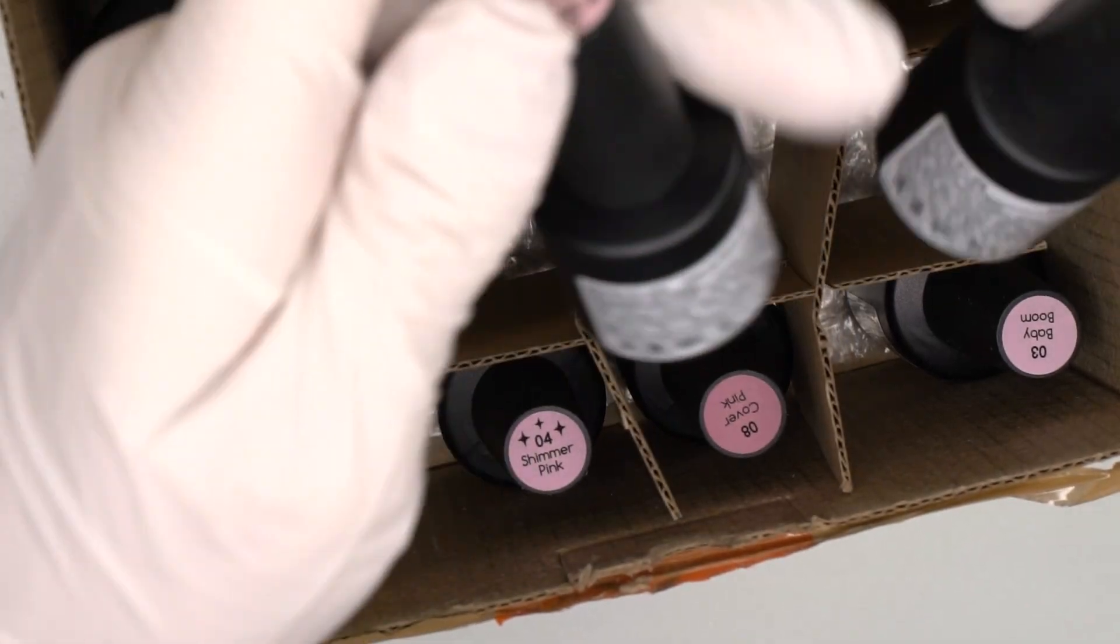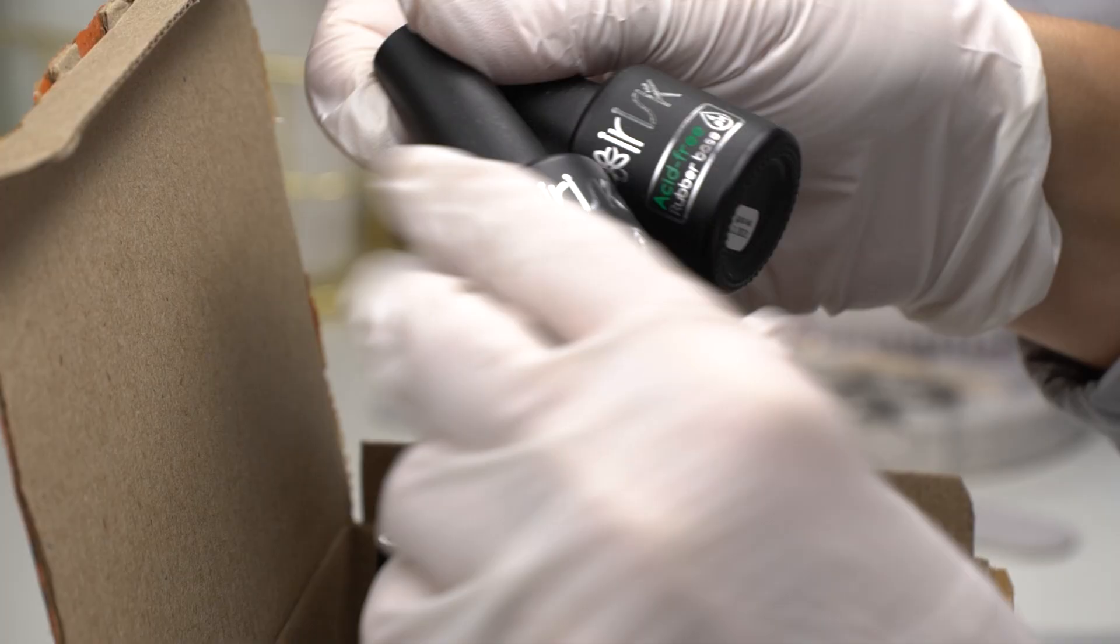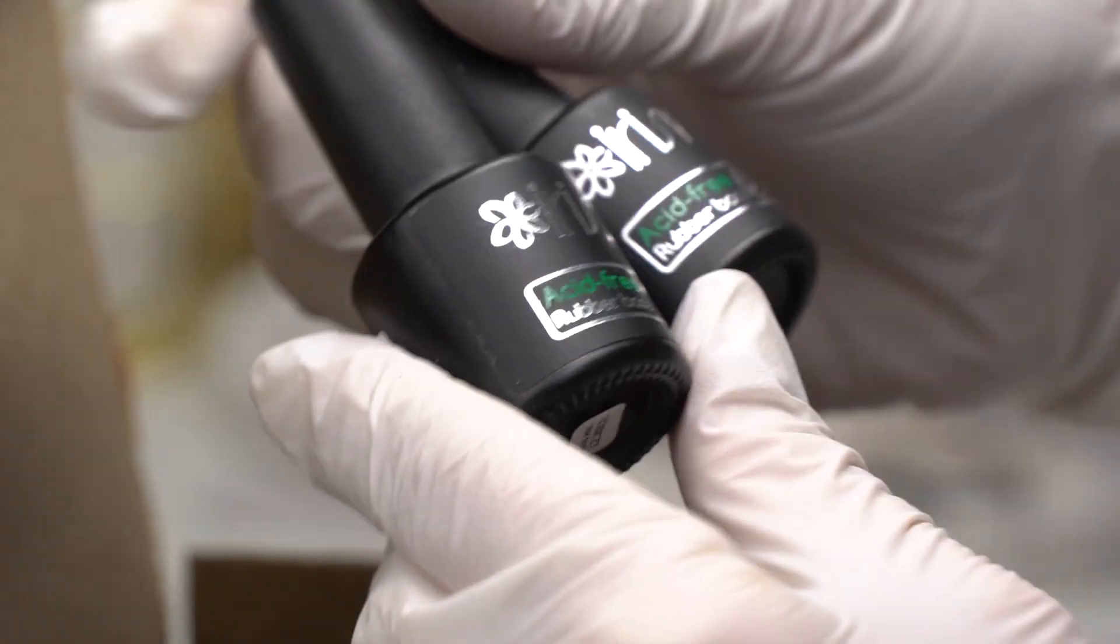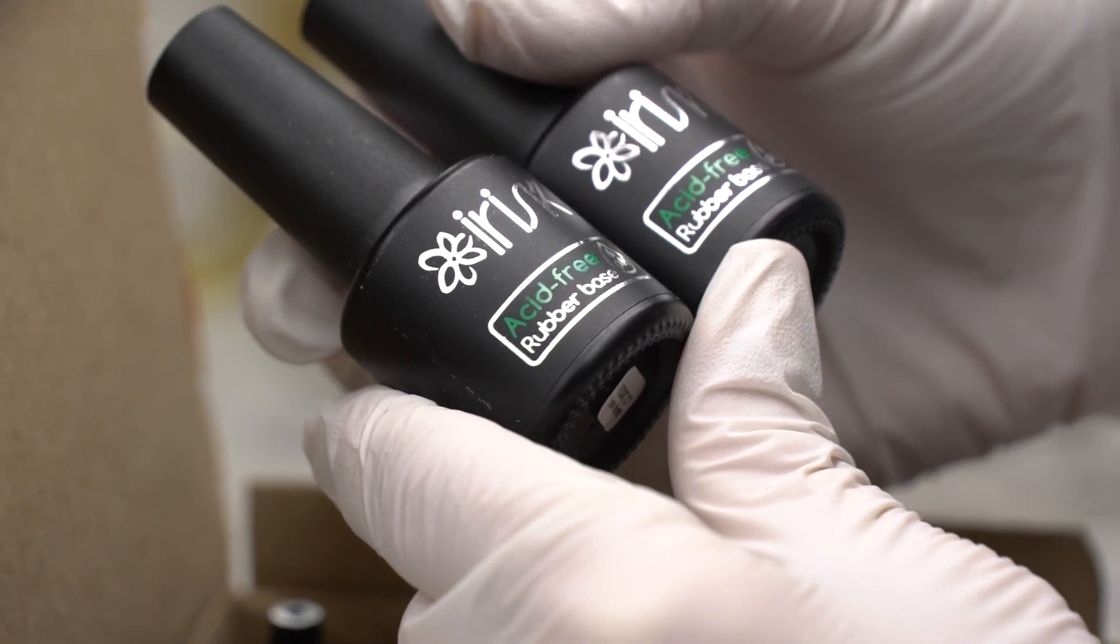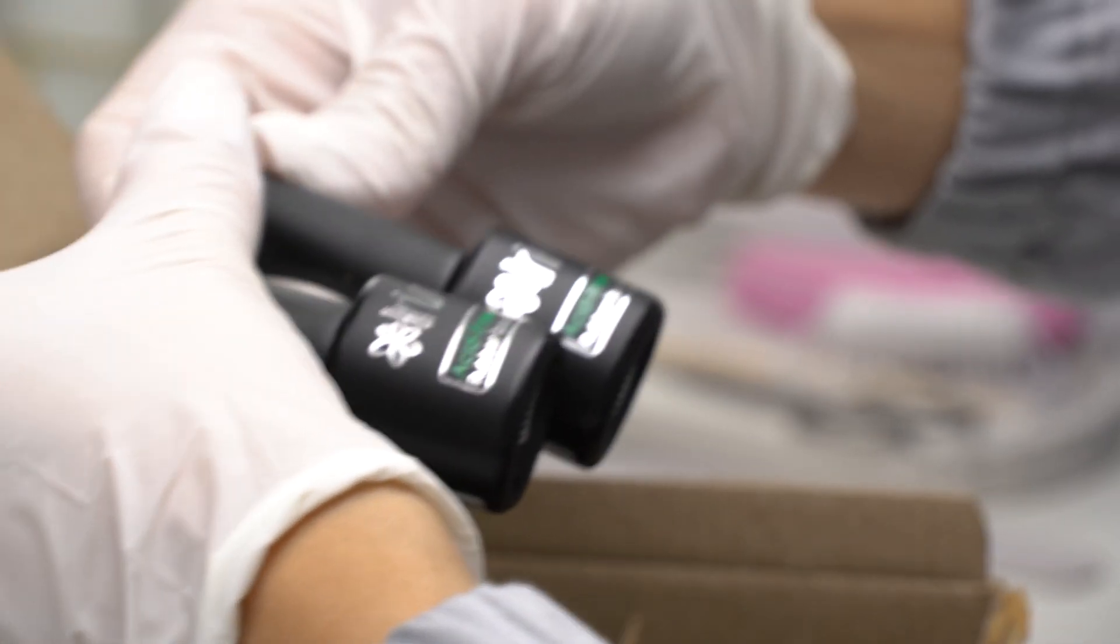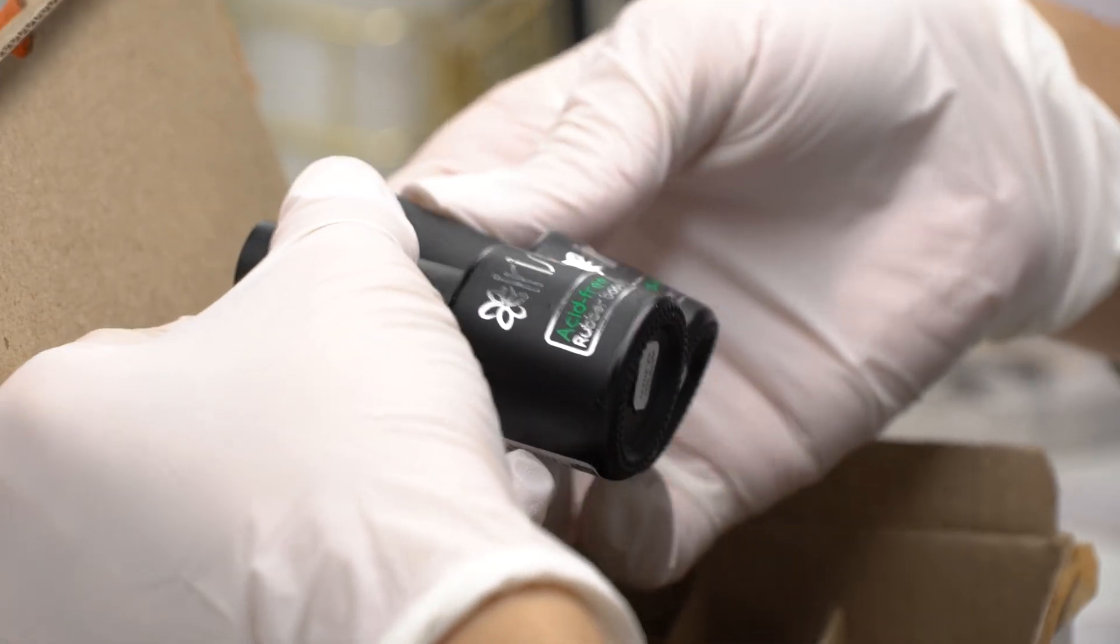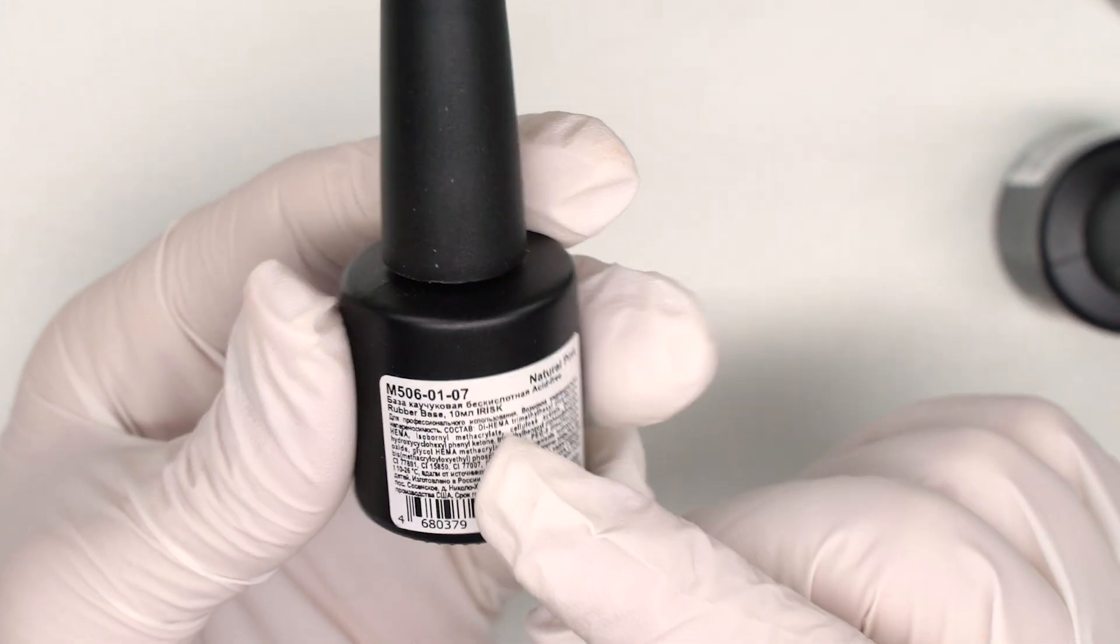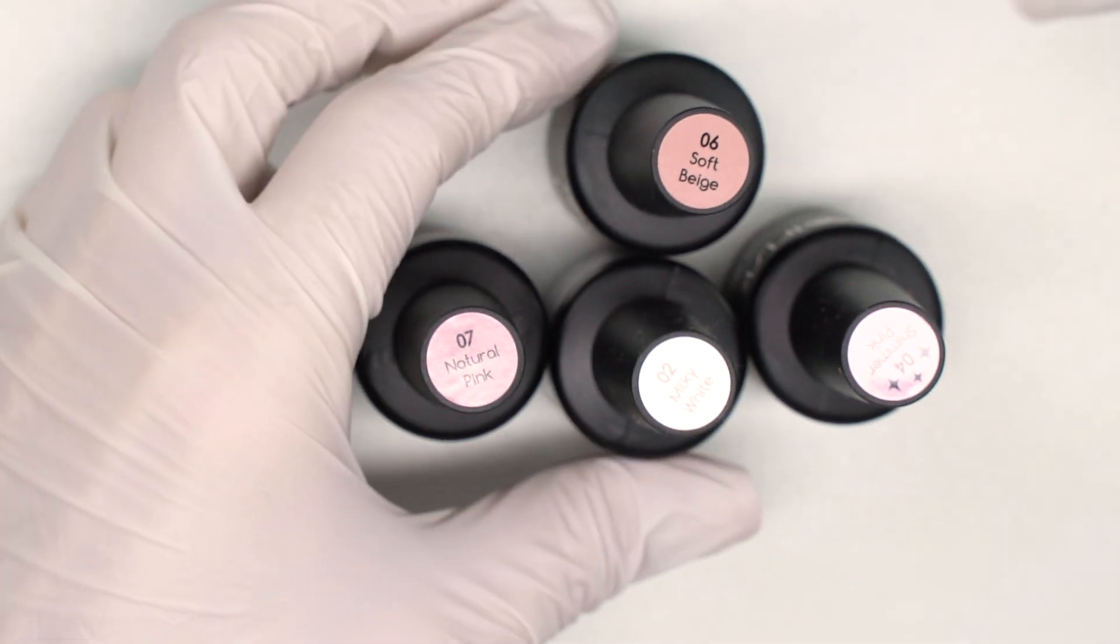And I've got new base coats by iRisk. They are acid-free. So let's take a closer look. Their pH indicator is 6, so these are neither alkaline nor acidic. Since their pH is neutral, they won't be too harsh on the nails.